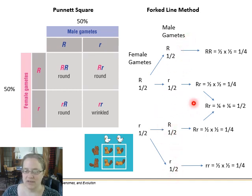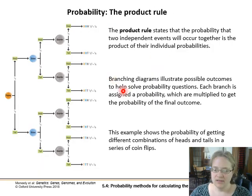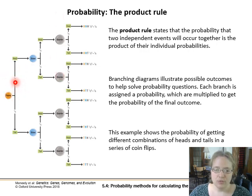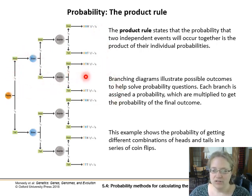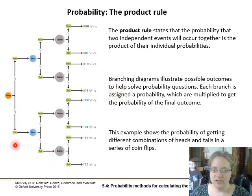The main rule in the forked line diagram is the product rule — the probability that various things all happen together. Whether a penny, dime, and quarter all land heads: we multiply those probabilities together to get the probability of all three happening at once. We calculate along each branch to get the probability of the final outcome.